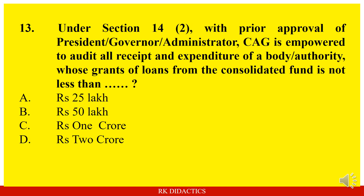Question: Under Section 14(2), with prior approval of President or Governor or Administrator, CAG is empowered to audit all receipts and expenditure of a body and authority whose grants or loan from the Consolidated Fund is not less than — Rs. 25,000, Rs. 50,000, Rs. 1 crore, or Rs. 2 crore? Answer: Rs. 1 crore.